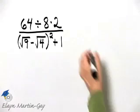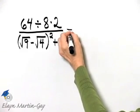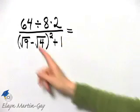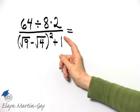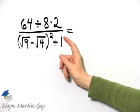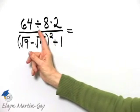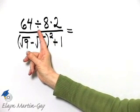Let's concentrate first above and think of order of operations. I have 64 divided by 8 times 2. Remember, we multiply or divide in order from left to right, so we will divide first.